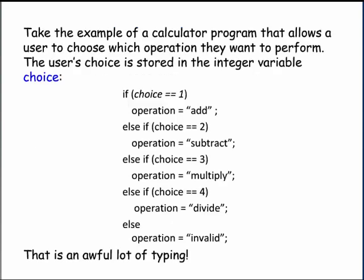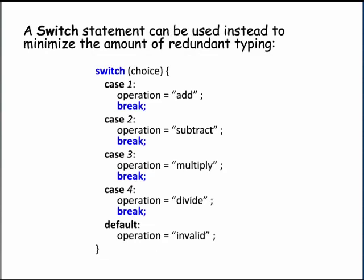Take the example of a calculator program that presents the user with a list of options for what type of calculation they would like to perform: addition, subtraction, multiplication, or division. The user is instructed to enter the integer corresponding to the respective operation — for example, choose 1 for addition, choose 2 for subtraction, and so on. Here, an if-then-else statement is used to translate the user's choice into the operation variable. As you can see, there is a lot of redundant code to type. A switch statement can be used to make a program easier to read and to reduce the amount of repetitive coding.